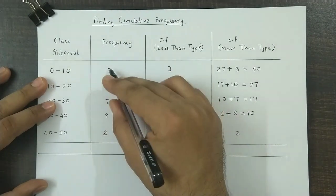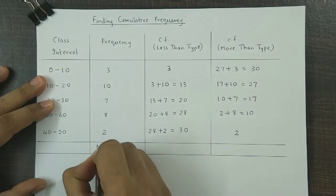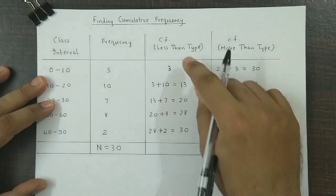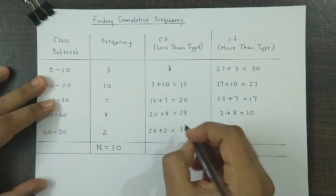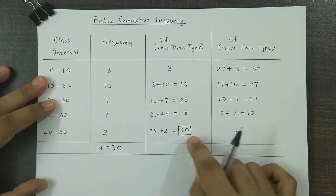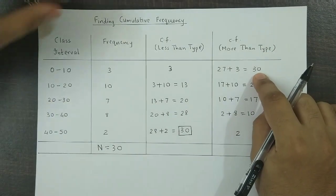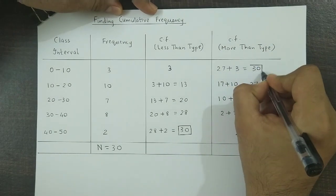Now one important observation: if we add all the frequencies, this would be 13, 20, and 10, that is 30. So the total frequency is 30. And if we observe, the less than type cumulative frequency ends at the total frequency—we have 30 over here. Likewise, more than type cumulative frequency also sums up to the total frequency, which is 30.